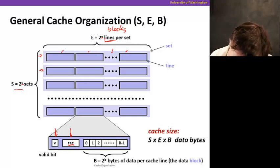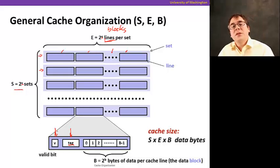There's also a valid bit here. The valid bit is used to determine whether the data stored in the data part of the cache is valid or not. For example, when the cache starts up, it starts up empty.